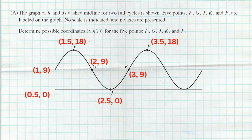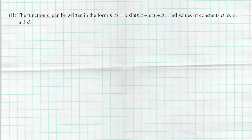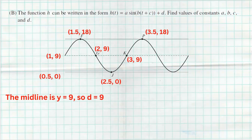The key thing that really helps is adding the starting point back at half a second: zero inches above the ground. That makes it easy to see where everything begins. Now the next question asks for the function h in the form a·sin(b·t + c) + d, finding the values of a, b, c, and d. Note that a and d are vertical transformations and b and c are horizontal transformations. The midline is clearly at y equals nine, so d equals nine.